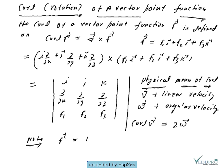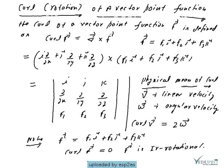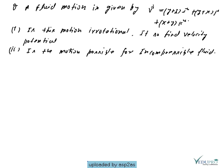For any vector f = f1·i + f2·j + f3·k, if we take the curl of vector f and it equals 0, then we can say vector f is irrotational. The question asks: for a fluid motion given by vector v, is the motion irrotational? If curl of v equals 0, then the motion is irrotational.